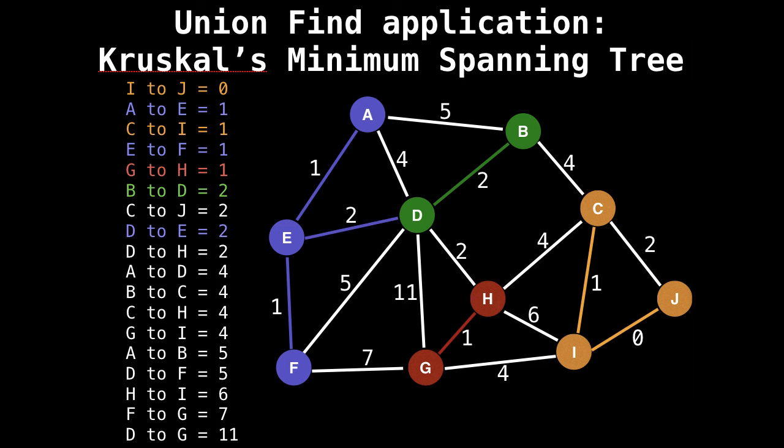Next is edge D to E. Note that E belongs to group purple and D belongs to group green. So now we want to merge them together because they don't belong to the same group. Either the purple group can become the green group, or the green group can become the purple group. It doesn't really matter.